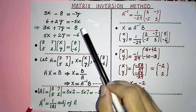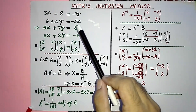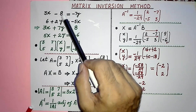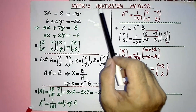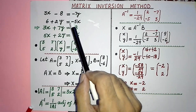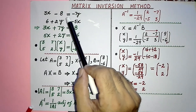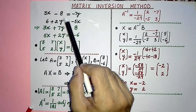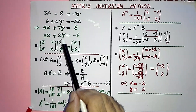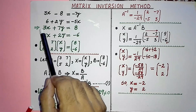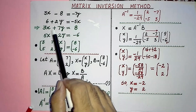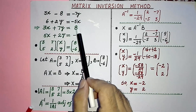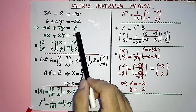In this video we are going to discuss how we can solve a system of linear equations in two variables by the matrix inversion method. This is a system of linear equations in two variables, and first of all we are to write them in standard form. Standard form means all variable terms are present on one side of the sign of equality, while the constant term is present on the other side.